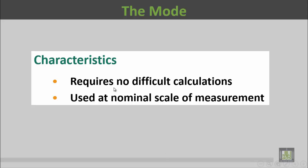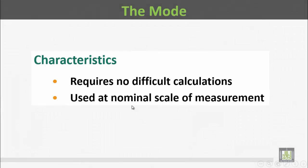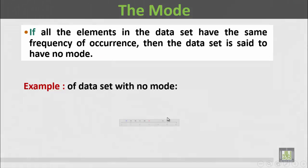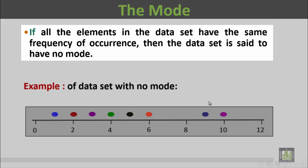Characteristics: The mode requires no difficult calculations. It's used at nominal scale of measurement. المنوال لا يحتاج إلى حسابات صعبة ويمكن استخدامه مع القياس الإسمي. If all the elements in the data set have the same frequency of occurrence, then the data set is said to have no mode.